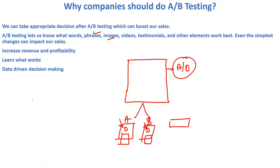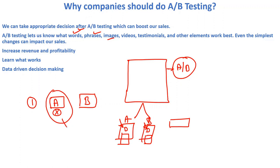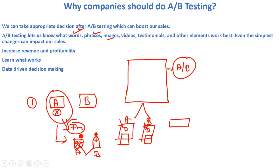However, we cannot test all things at once. What we do is create variations one at a time. In the first variation, we test only the words in version A vs. version B and analyze the conversion rate. If a particular word performs better, we choose that version, then apply the next variable — like images — and again create two versions A and B to test. This way we perform testing in variation mode.